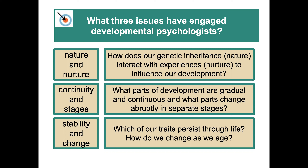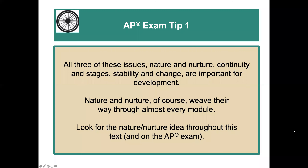This is a big question in terms of our physical, social, and cognitive development. The second issue is continuity and stages. We're going to be talking about lots of different psychologists who have done research and come up with profound theories — some are stage theorists and some believe more in a continuity of development. What parts of development are gradual and continuous, and what parts change sort of abruptly into different stages? And finally, the third big issue is stability and change: which of our traits persist throughout our life and which ones actually change as we age?